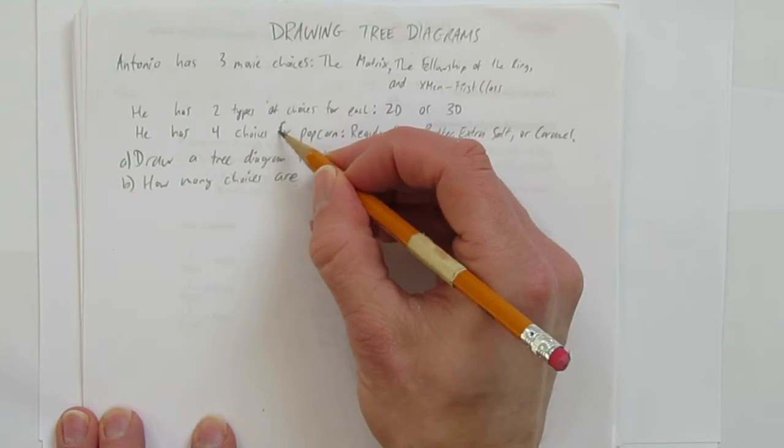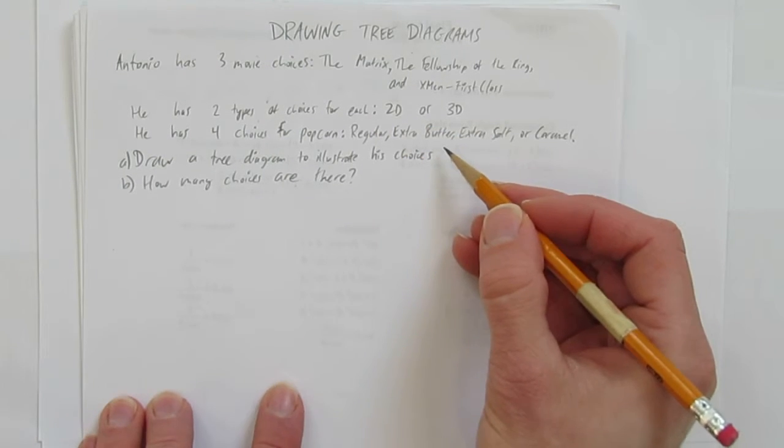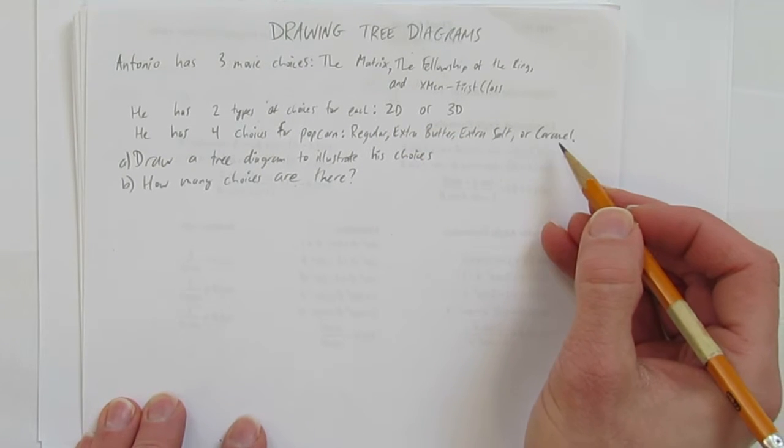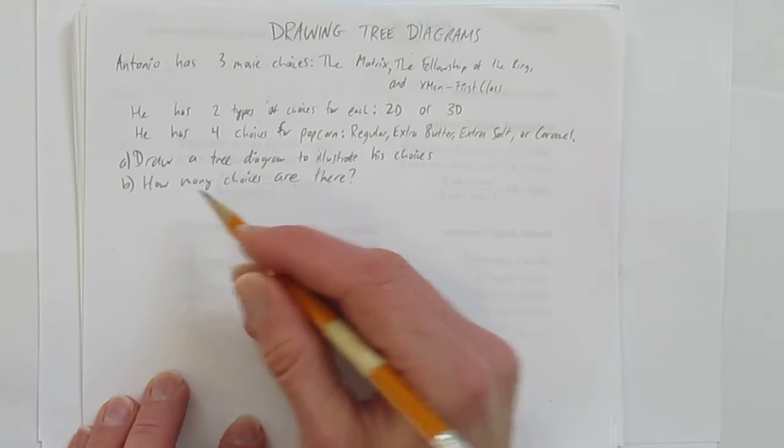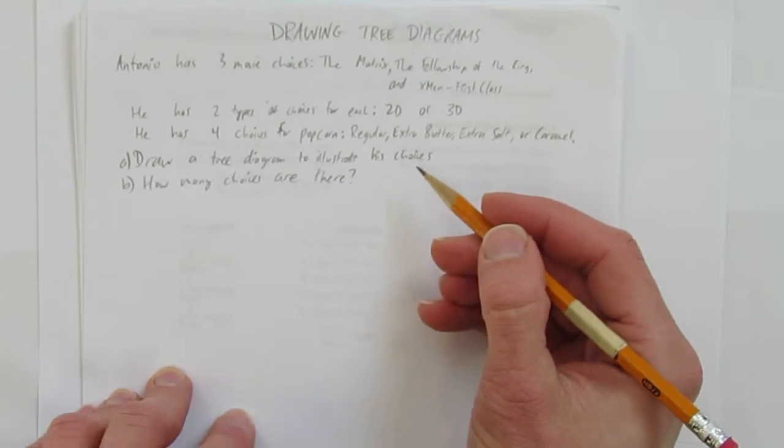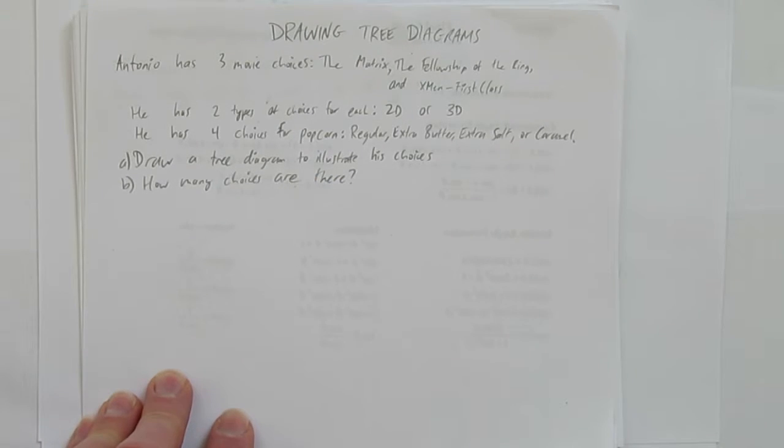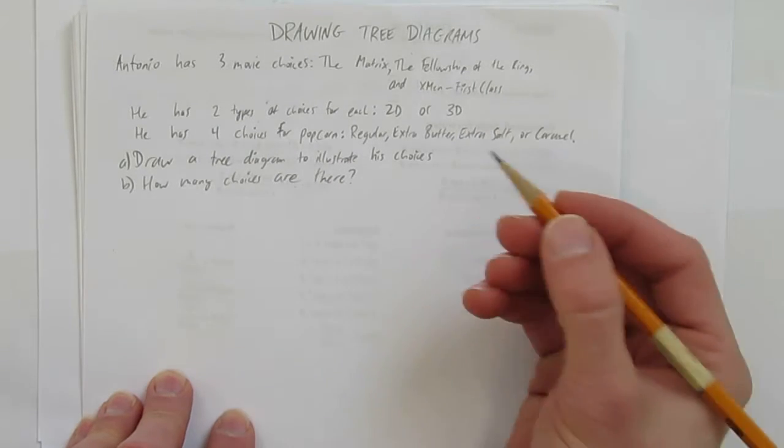He can have regular popcorn, extra butter, extra salt, or caramel. So first, let's draw a tree diagram and illustrate his choices. And then secondly, we'll look at how many choices there are.